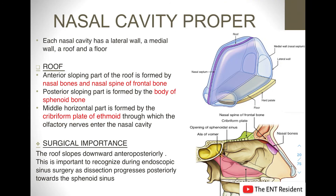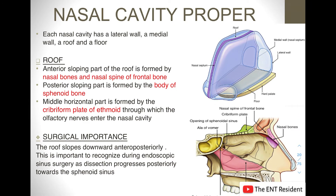Next we move on to the nasal cavity proper. So far we have studied the vestibule, the external nasal valve, and the internal nasal valve. Each nasal cavity has a lateral wall, a medial wall, a roof, and a floor — four boundaries. Anteriorly it communicates with the exterior through the nares, and posteriorly with the nasopharynx through the choana.